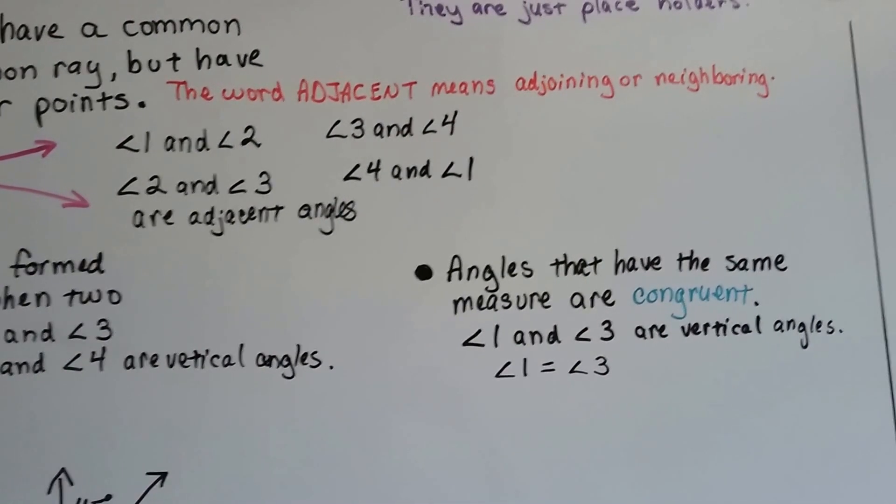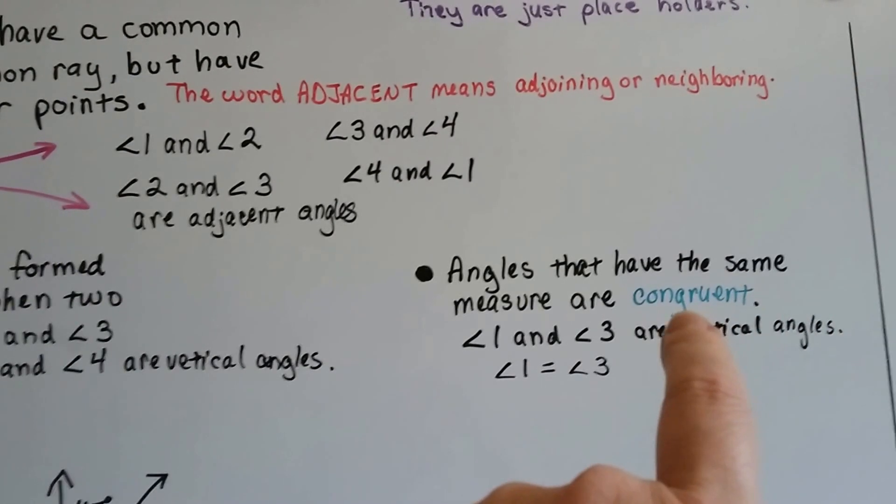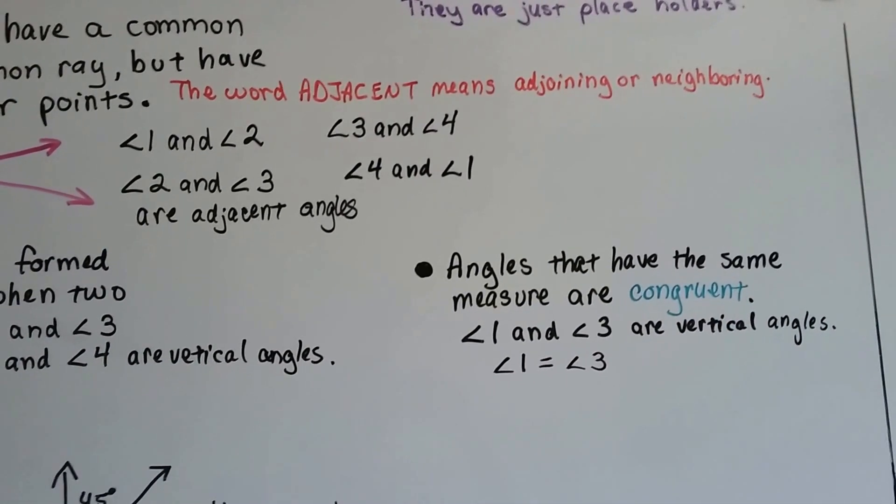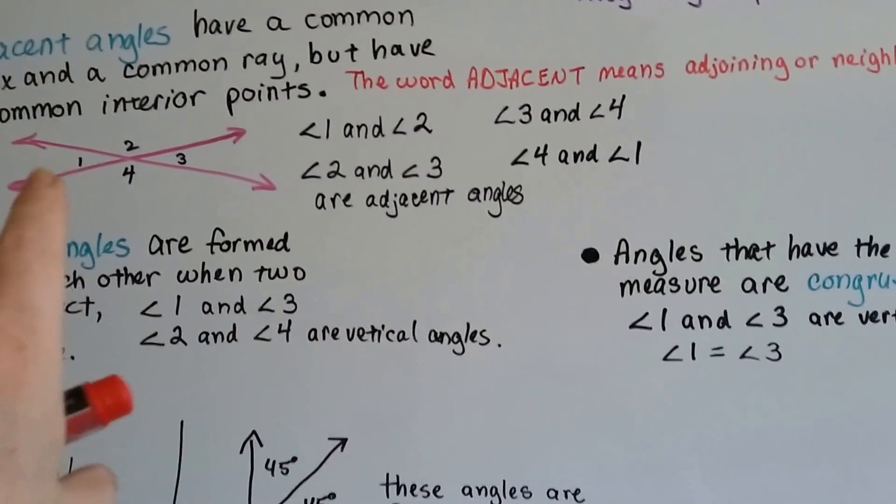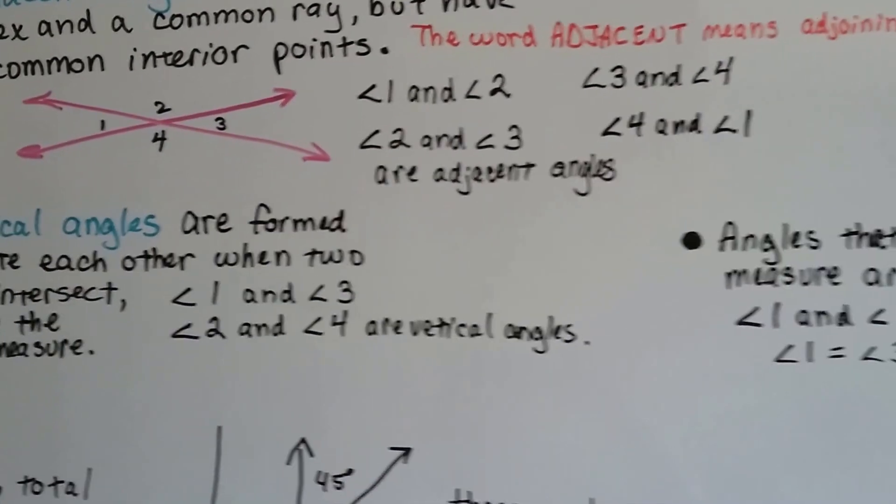Angles that have the same measure are congruent. So you're going to see congruent a lot in geometry. Angles 1 and 3 are congruent. It means equal.